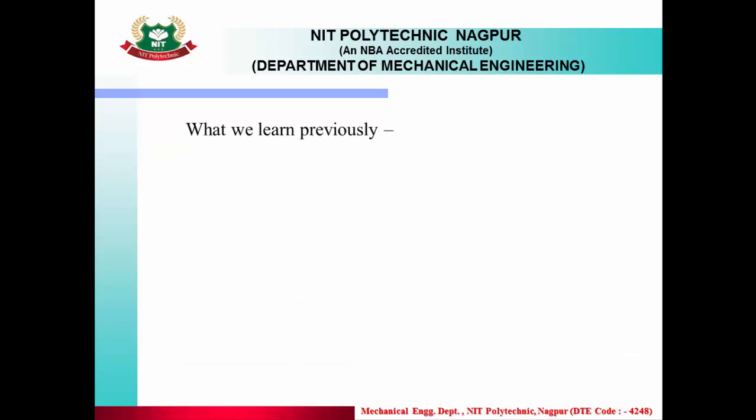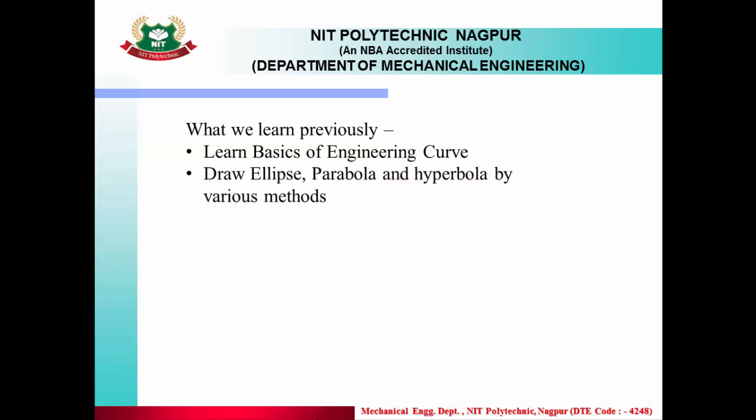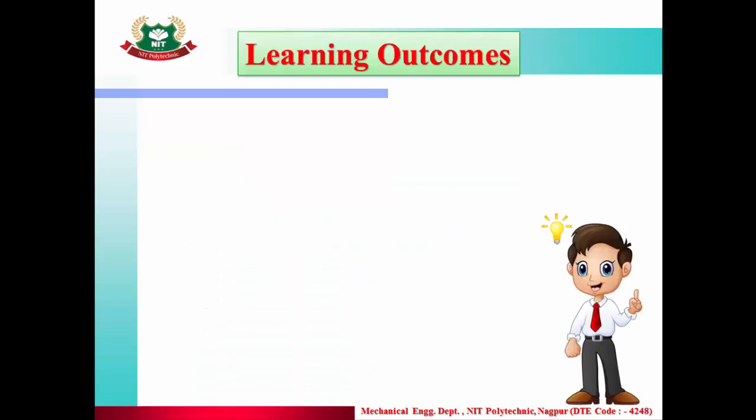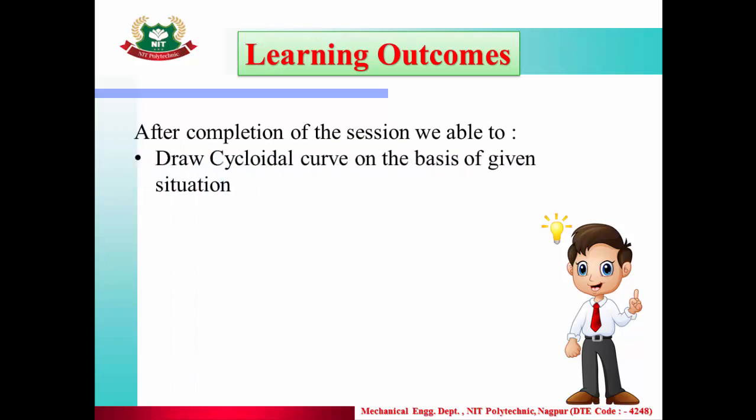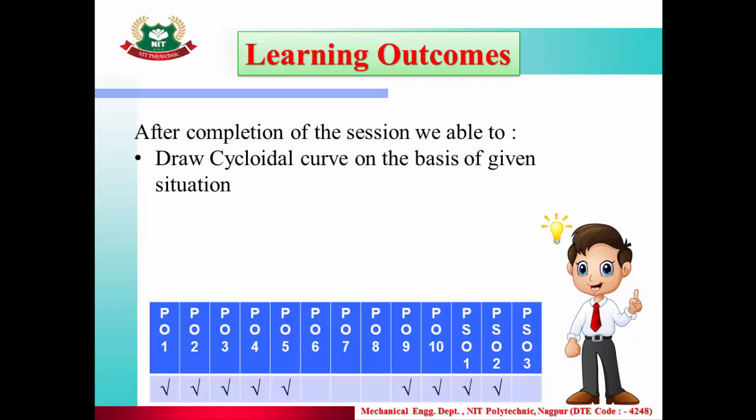Let's see what we learned previously. We learned about basics of engineering curves. We learned how to draw ellipse, parabola, hyperbola by various methods. We learned different engineering curves and how to draw involute. So learning outcomes: after completion of the session, we are able to draw a cycloid on a basis of given situation. And these are your program outcomes.